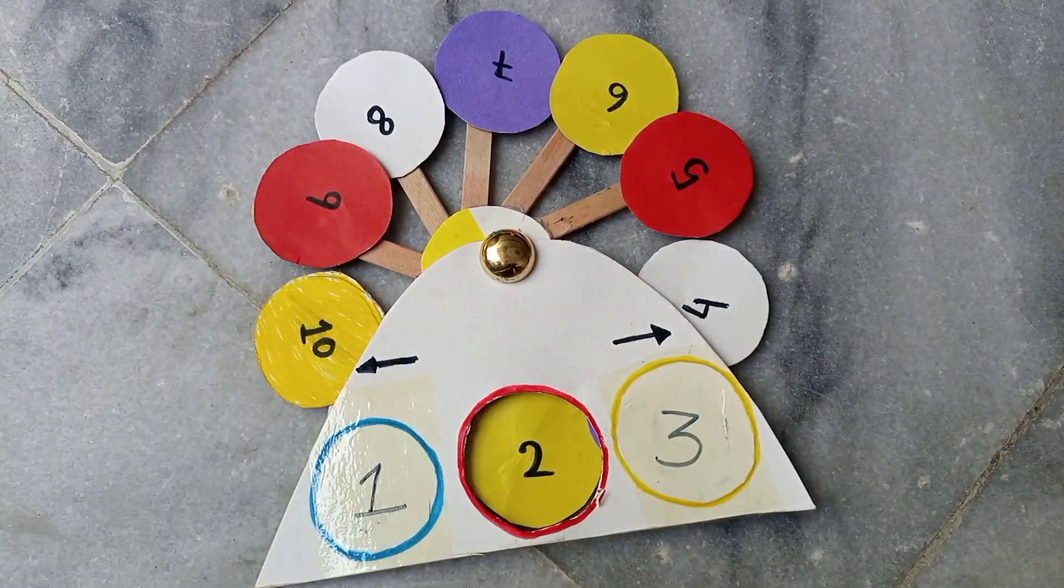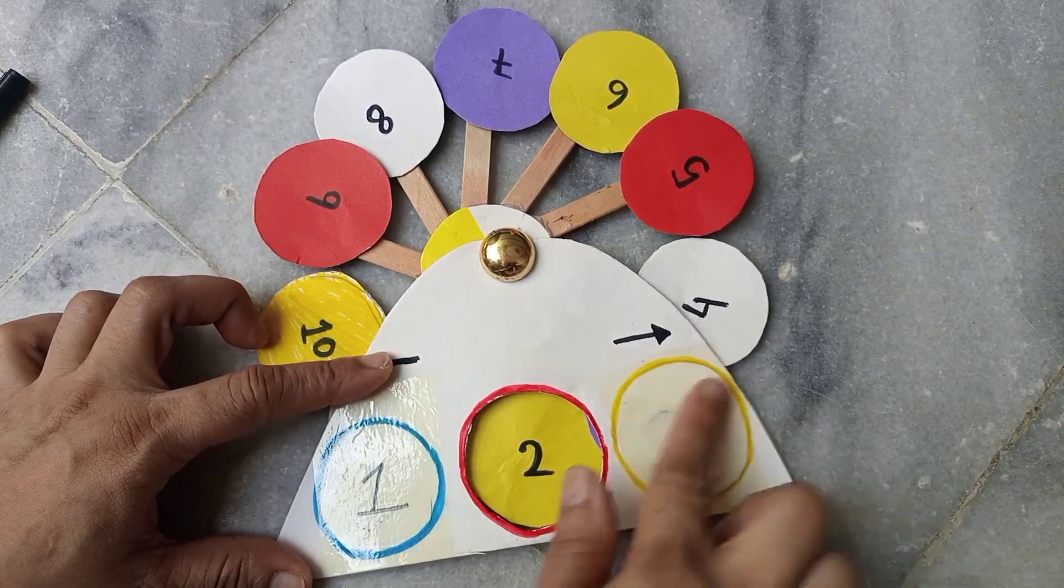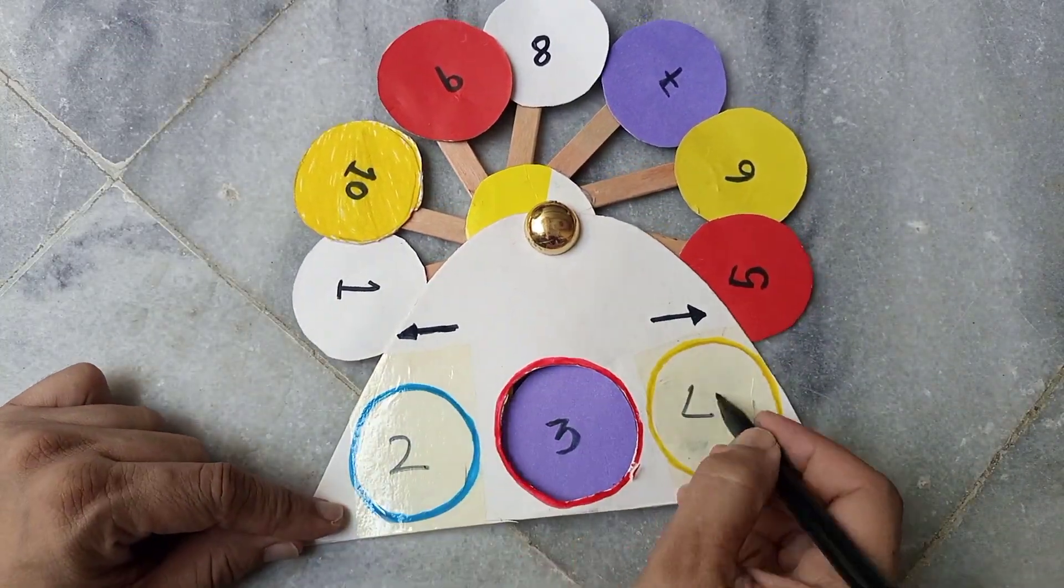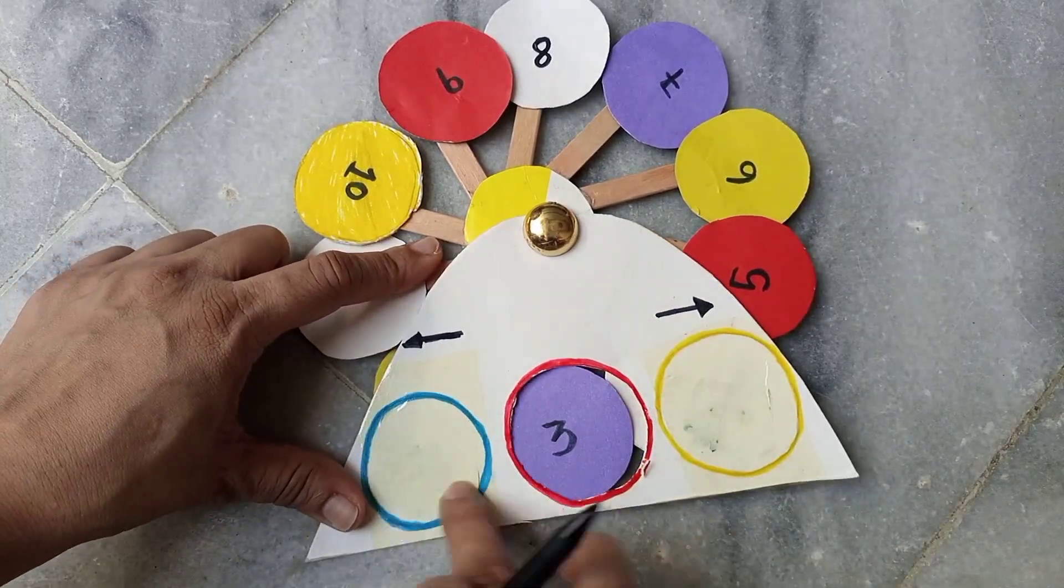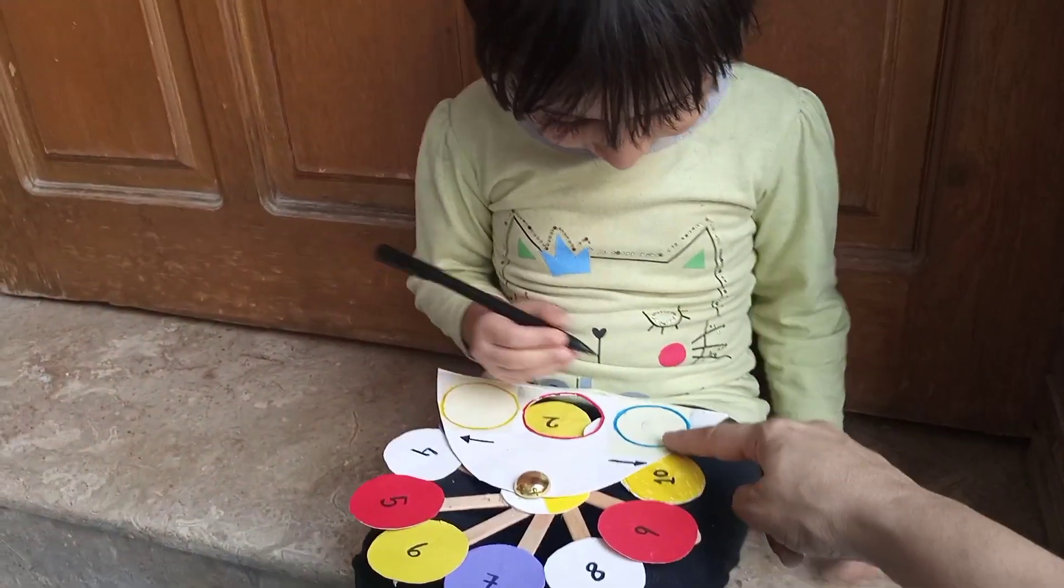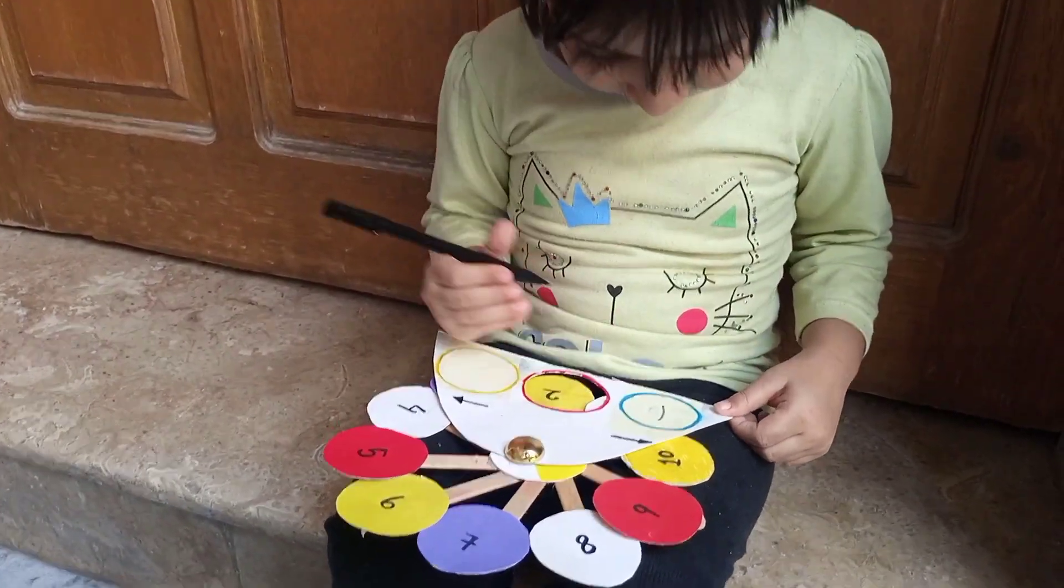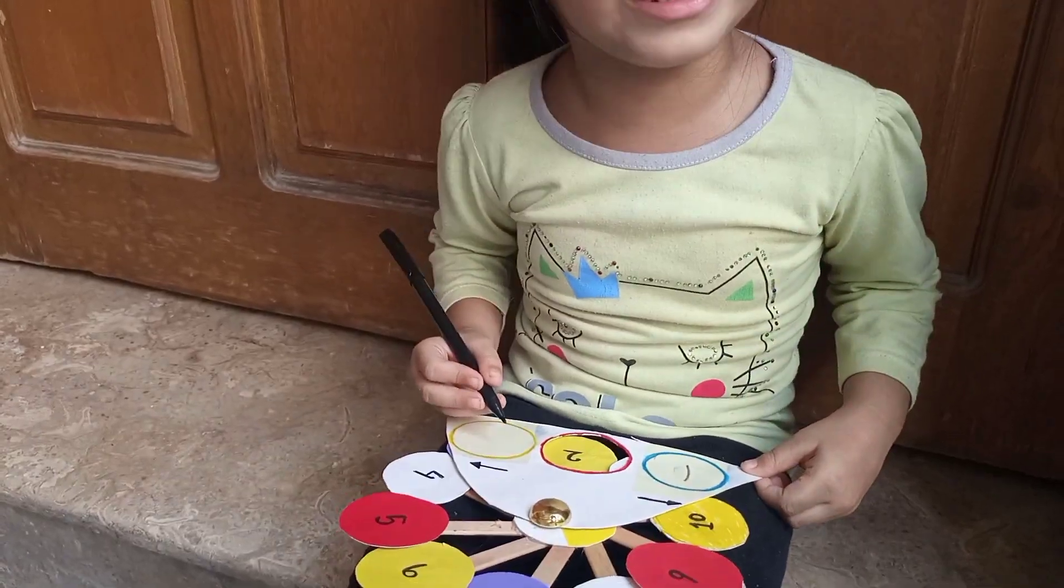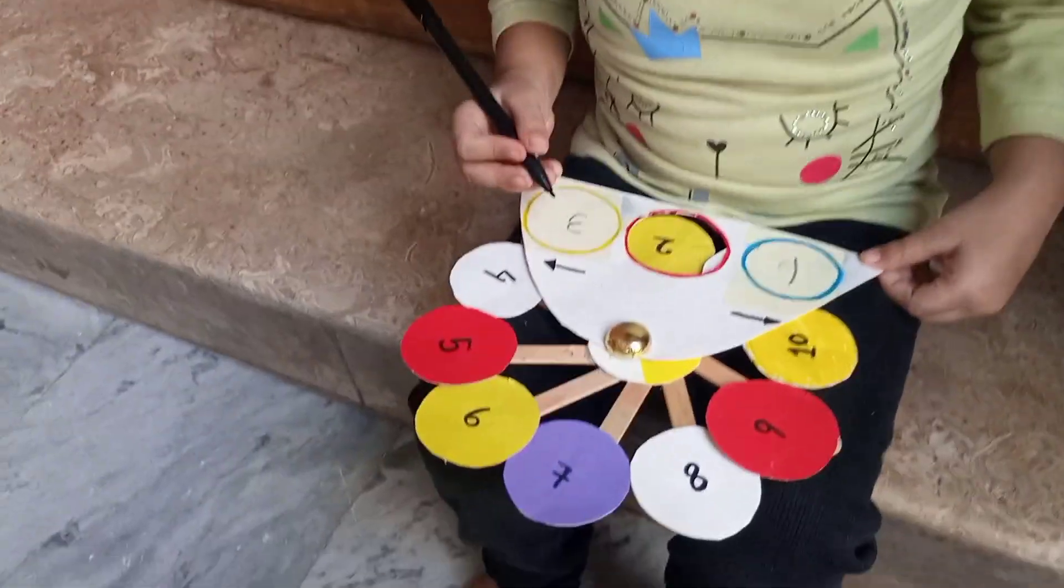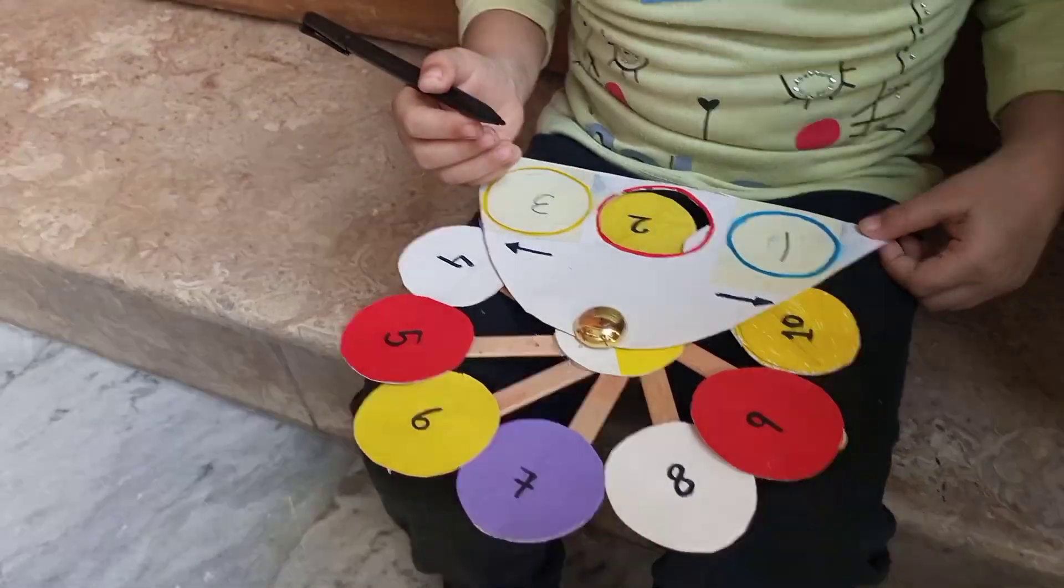You will use ice cream sticks and write one, two, three, and you can erase it. It's erasable. You can see my cute daughter is writing one, two, three and she can erase it. She can write one to ten, and you can change the numbers like you can start from ten or eleven to twenty. It's up to you.